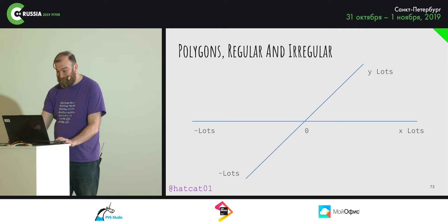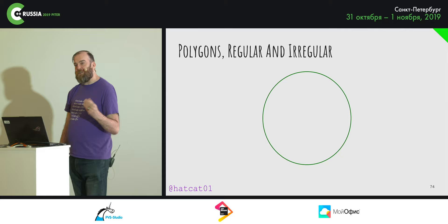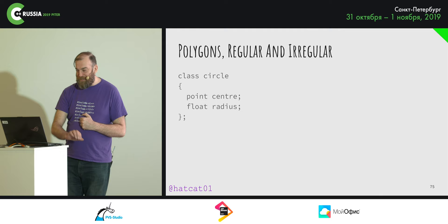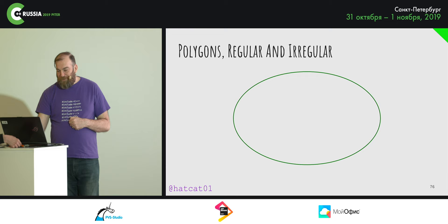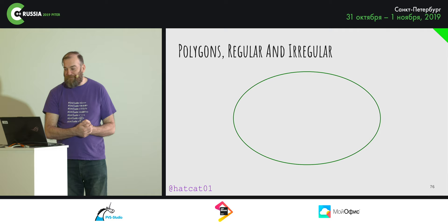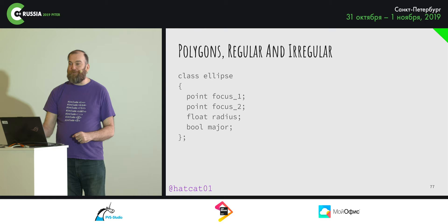Let's start with a circle. We can't describe this as a series of edges — we have to return to first principles and model it as a center and a radius, giving us a circle class. What about an ellipse? Two foci and the major or minor radius are enough — we have five floats and a flag, where the flag tells us whether it's oblate or prolate.